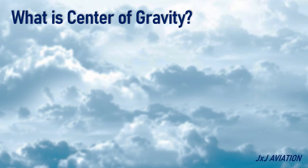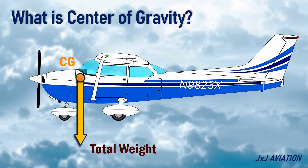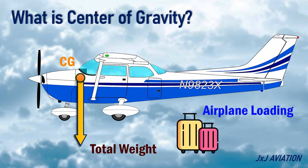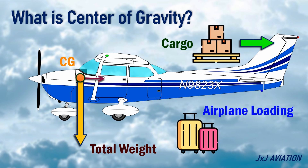First, let's understand what is center of gravity. The center of gravity, or CG, is the point where the total weight of the aircraft is balanced. The CG shifts based on how the aircraft is loaded. One of the factors that causes the CG to shift is the cargo loaded on the aircraft. If the cargo is loaded towards the front, the CG shifts forward. If more cargo is loaded towards the back, the CG shifts backward.